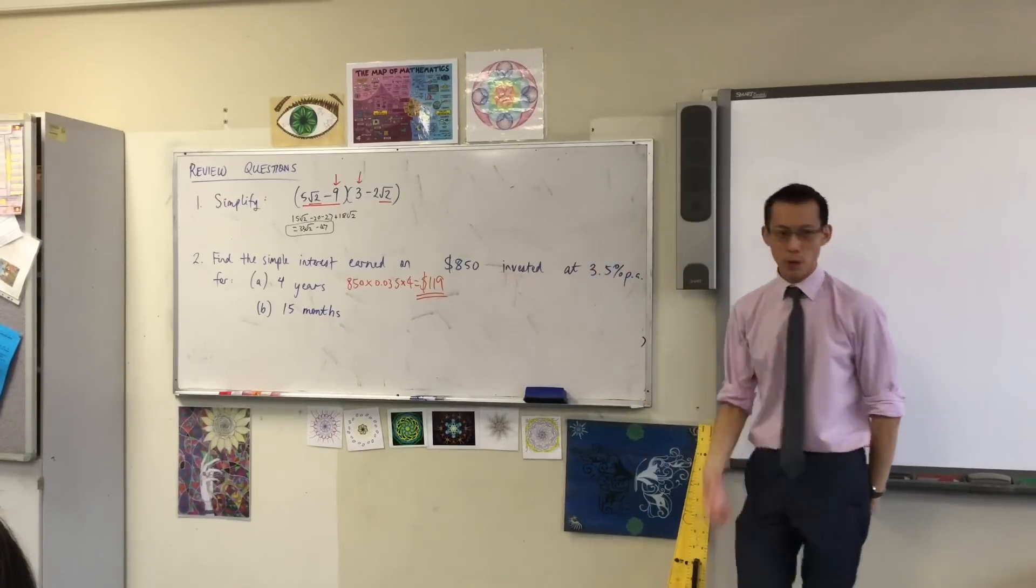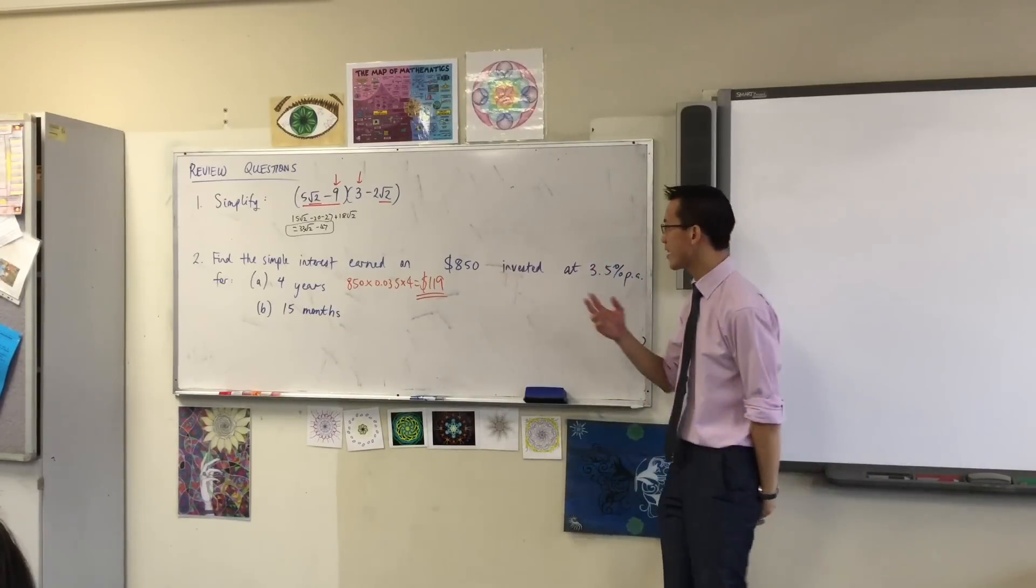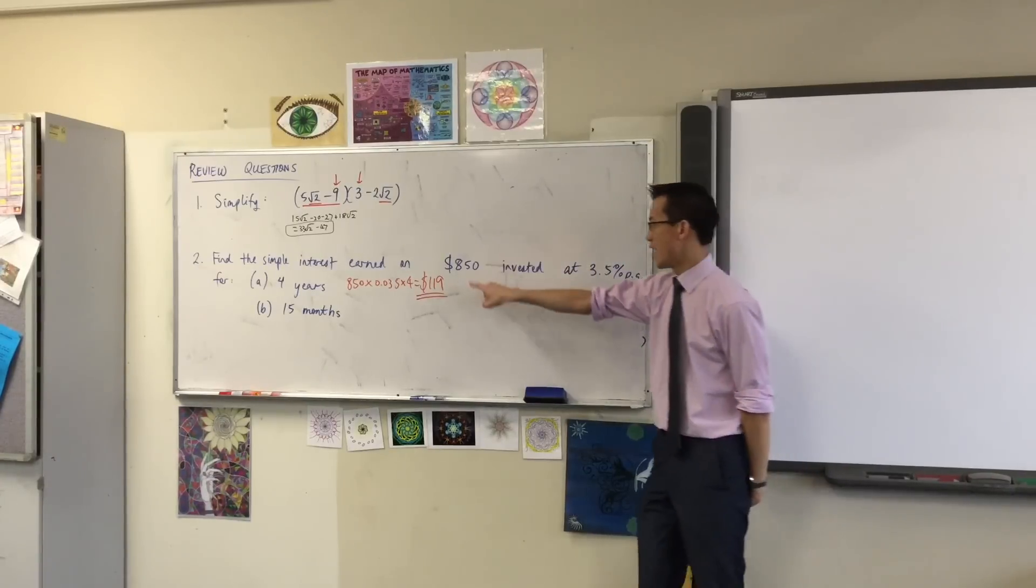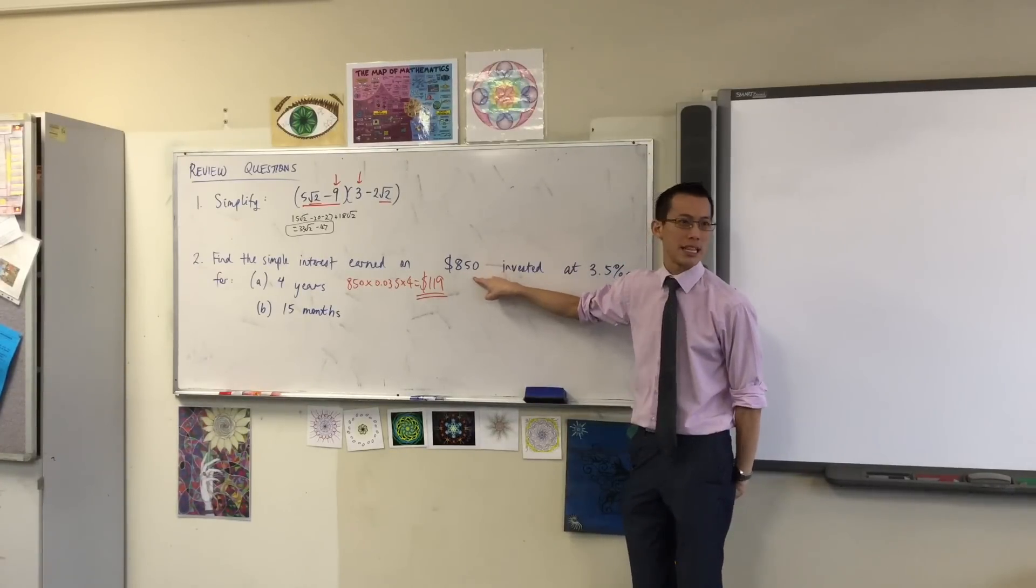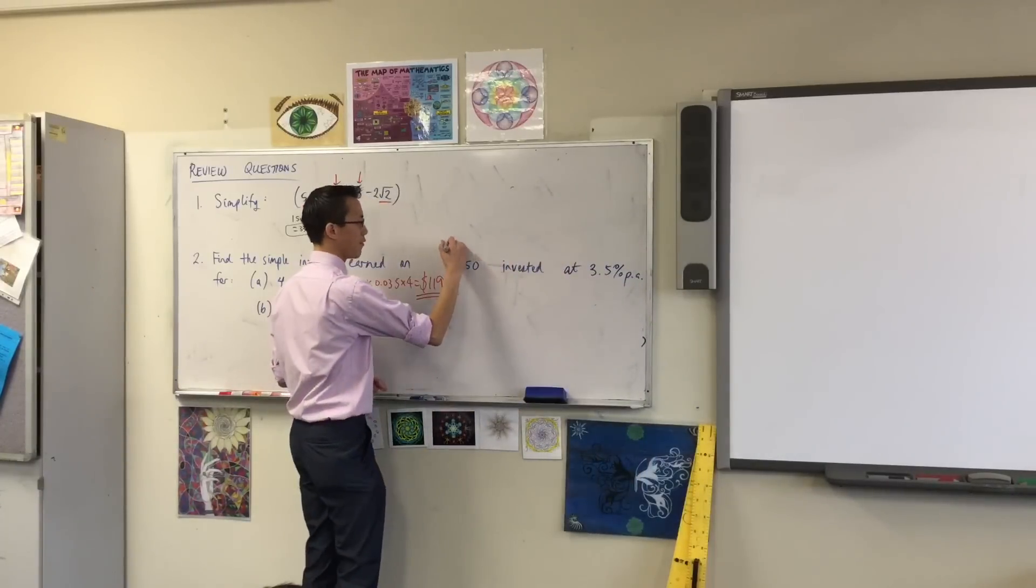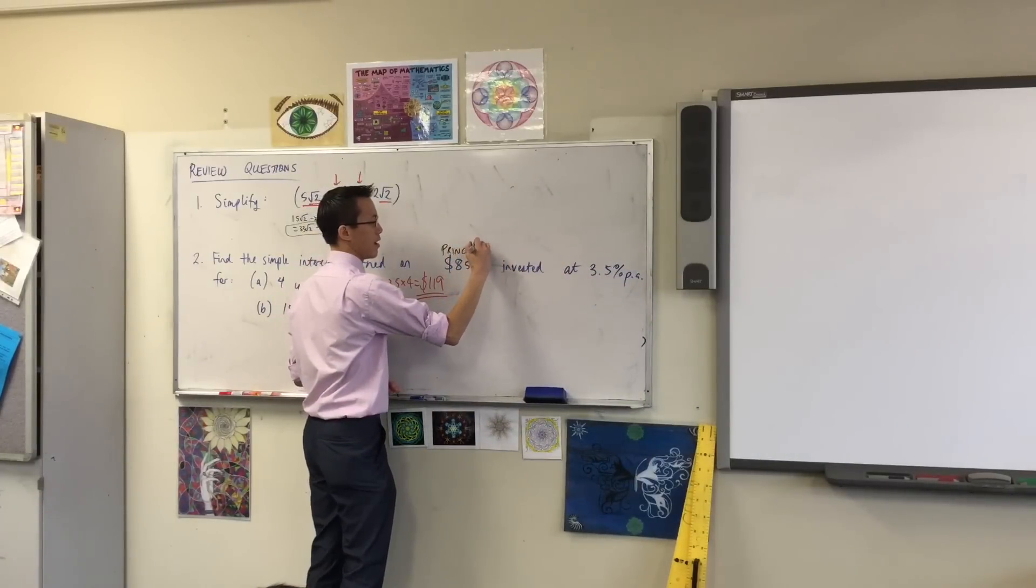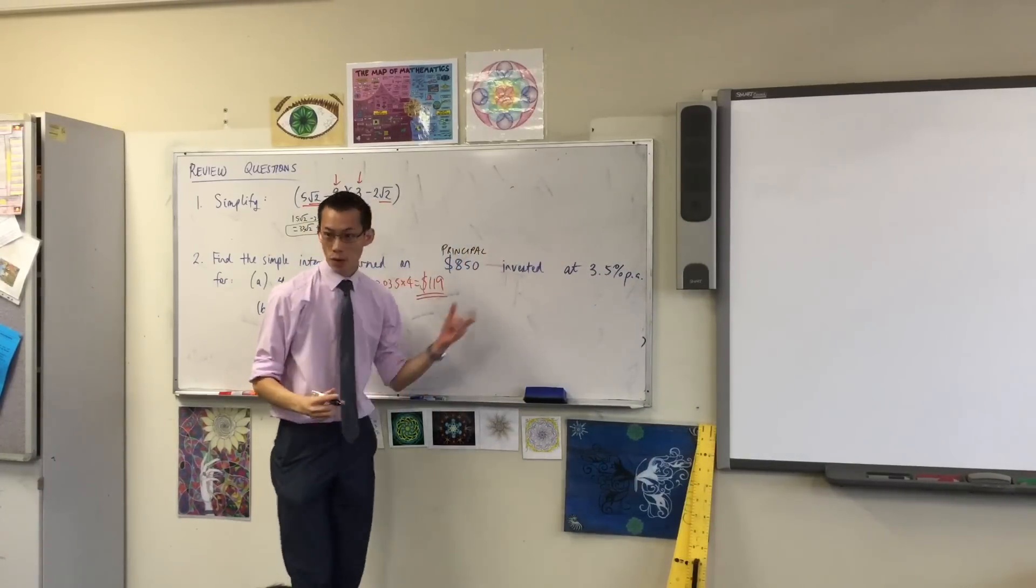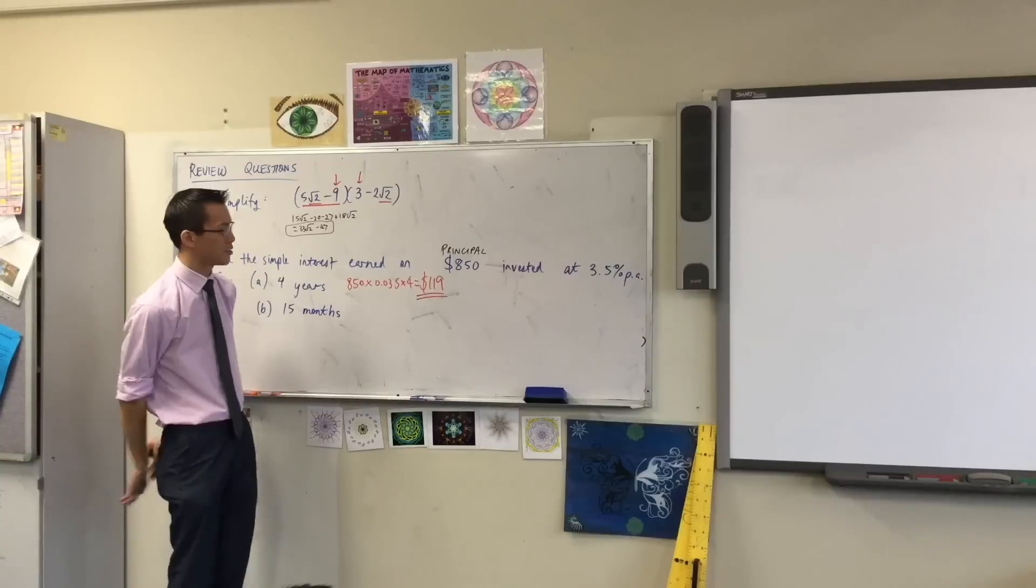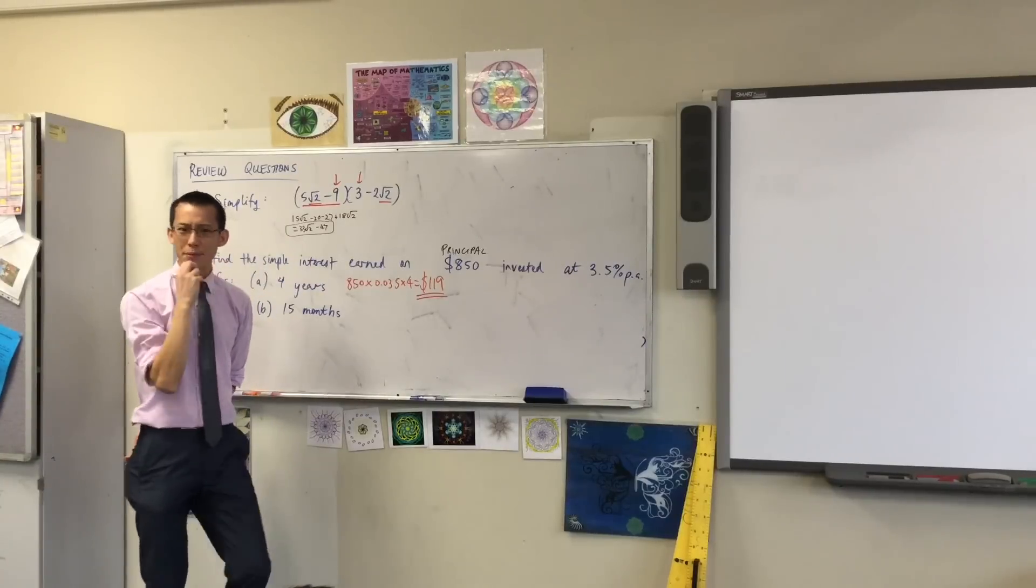Let's have a look at this one. Number two, simple interest - you had a look at last week. You're given three numbers. If you have a look at each question, what do we call this? It has a special name, starts with a P. We call this the principal. In fact, if you wrote down the question, I really like labeling what's what in an equation.